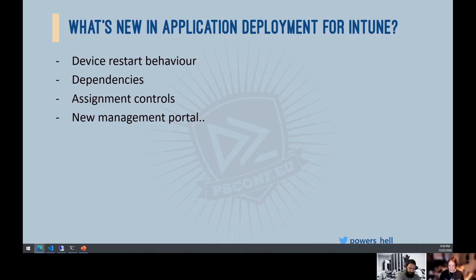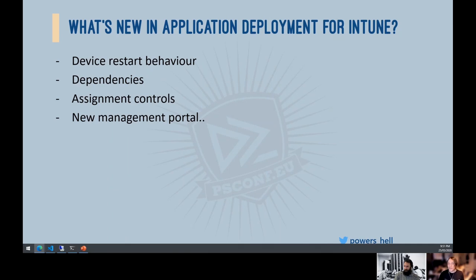That is where Intune comes in. Even if you're paying for a corporate Chocolatey license with a local cache, you still need a way to force the package to install on the end user's machine. The device already has the Intune agent — you use it to kick off a PowerShell script that installs from Chocolatey or winget. Intune is the delivery mechanism; which package manager you use is up to you.